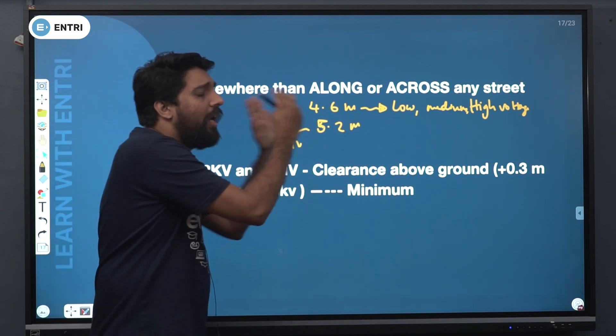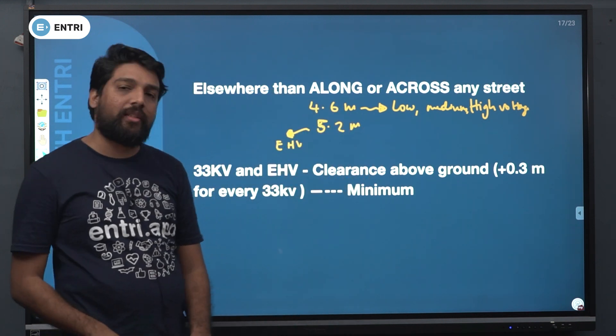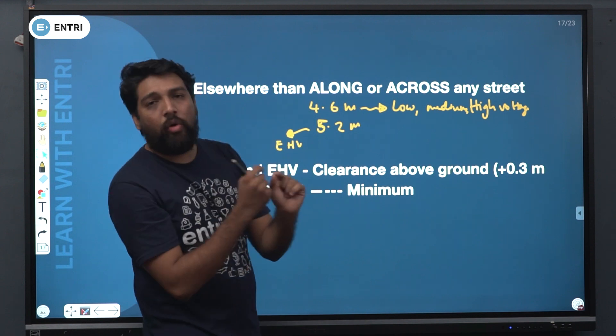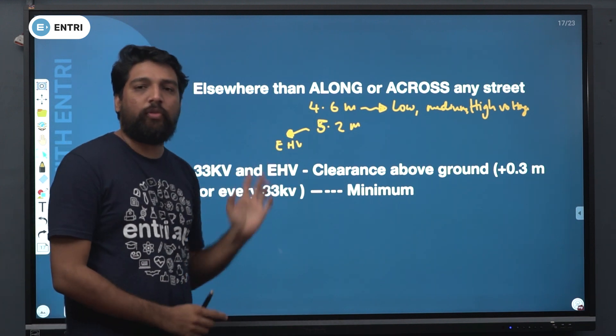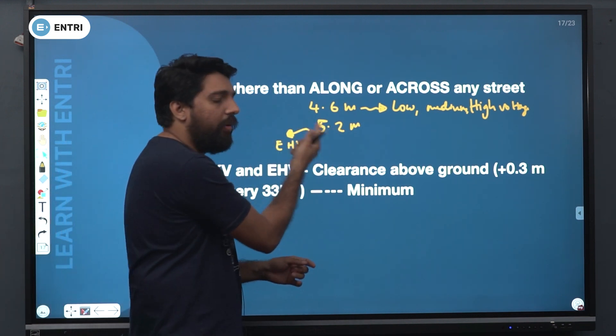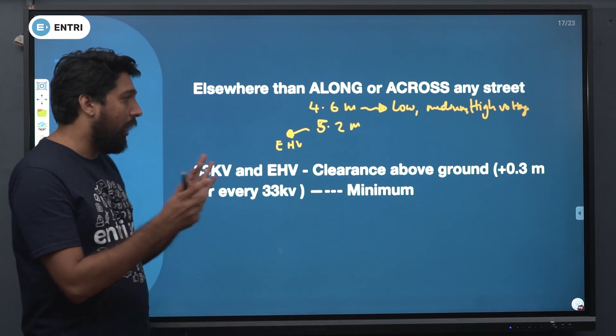Elsewhere than along or across any street: if it is having low voltage, medium voltage, or high voltage, your answer is 4.6 meters. If you are having extra high voltage, your answer will be 5.2 meters.